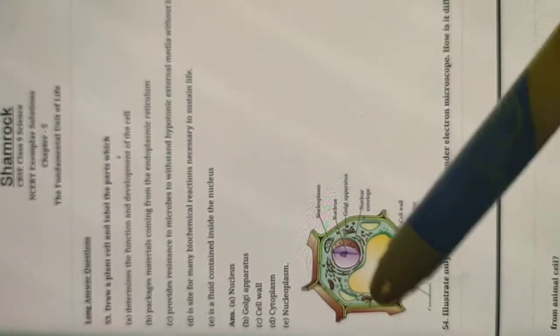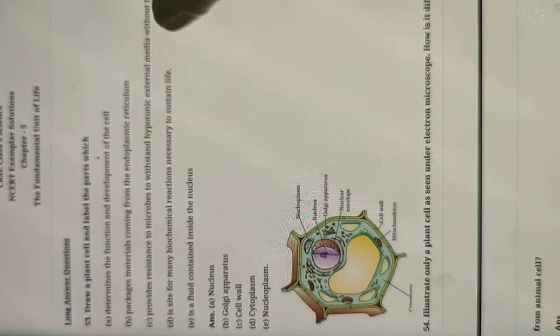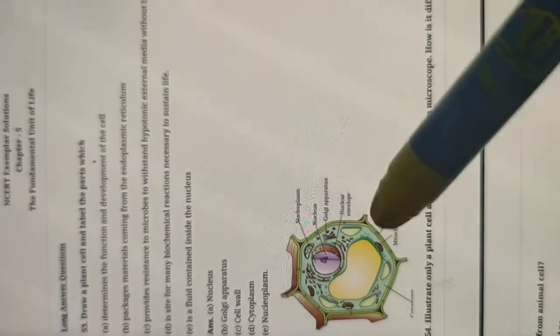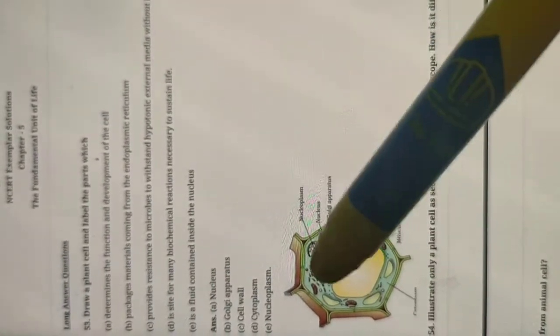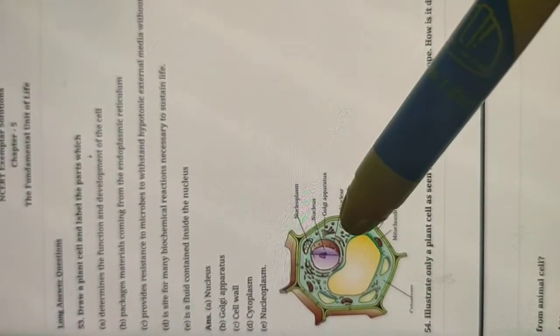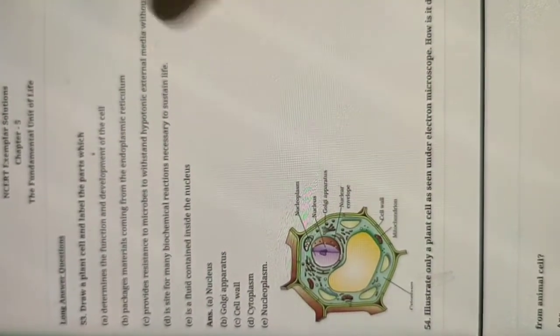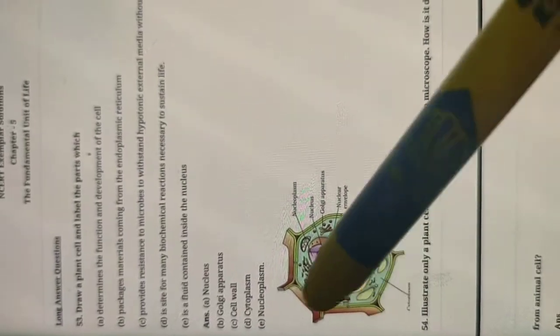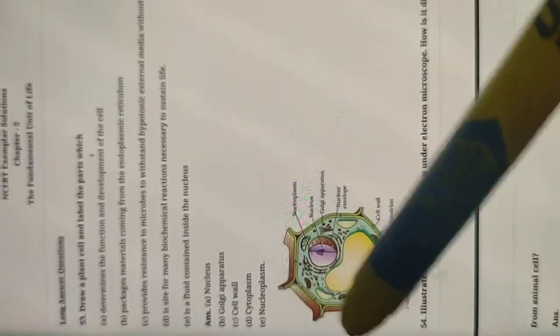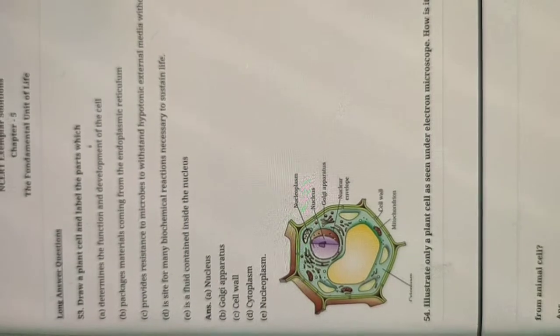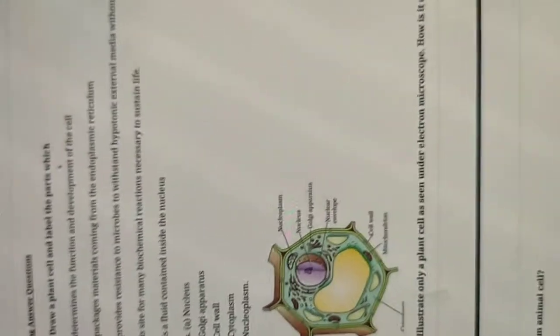If you see the figure in your NCERT, they have given a 3D figure. When you draw a plant cell and animal cell, the outer structure is very important. Internal organelles are almost the same, but the external shape of the cell matters a lot. For a plant cell, we draw a hexagonal or pentagonal shape — not a uniform oval structure.